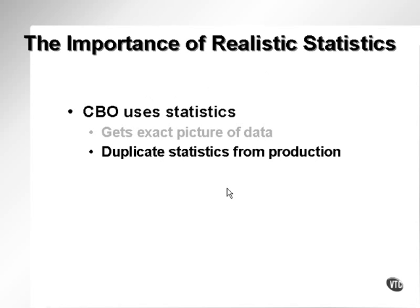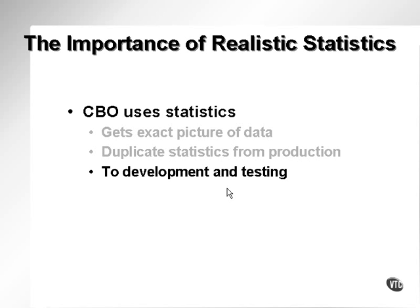One thing you can do in terms of the importance of realistic statistics is, when testing and developing, you can duplicate sets of statistics from the production database across to test and development databases. This means that, assuming you have a production database with a realistic set of statistics, you can develop and test recent changes to your applications based on an actual picture of a production environment. It is quite typical that in development environments, SQL code performance is essentially tested on data created by developers, which is often not a realistic picture of what the database will look like when in production.